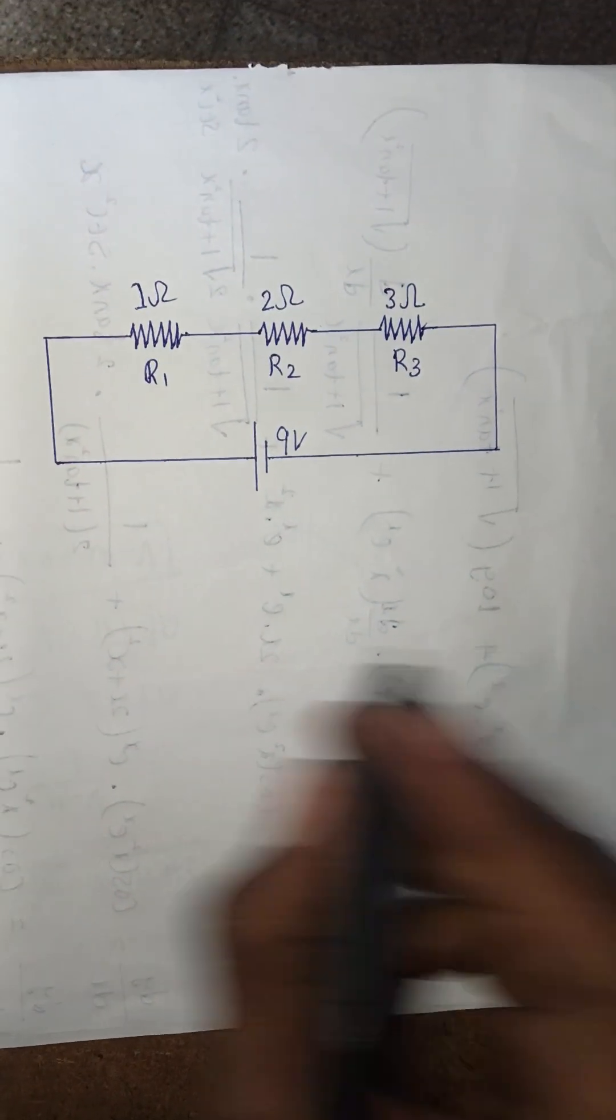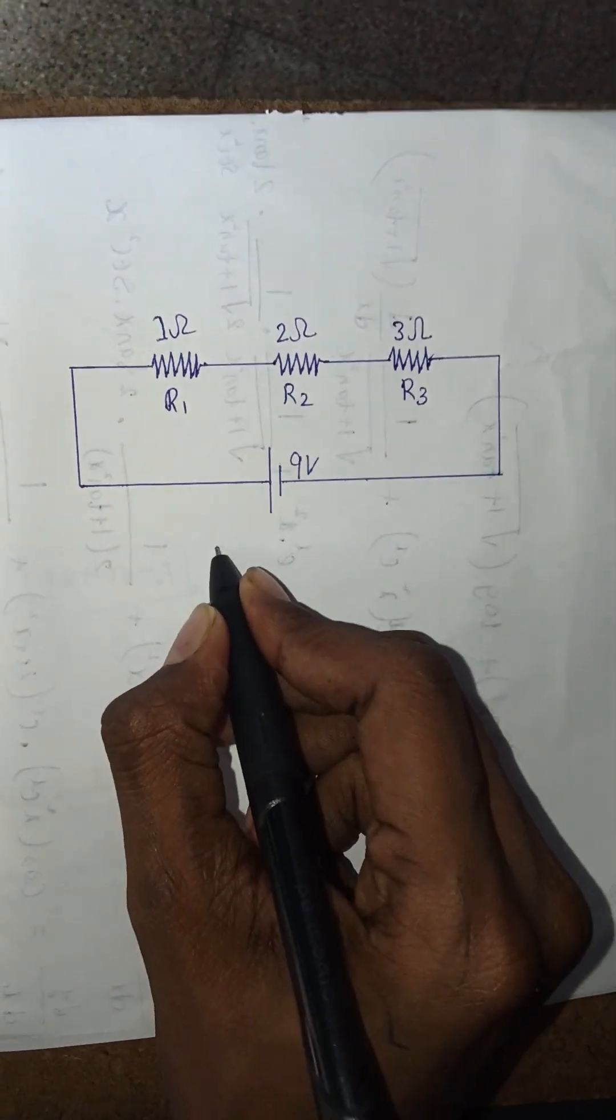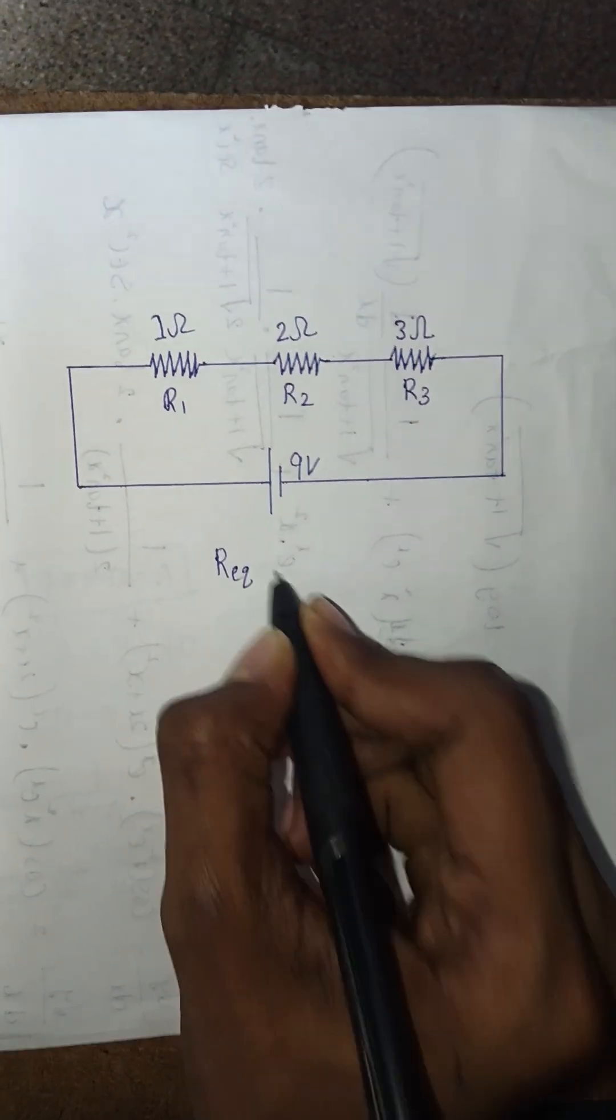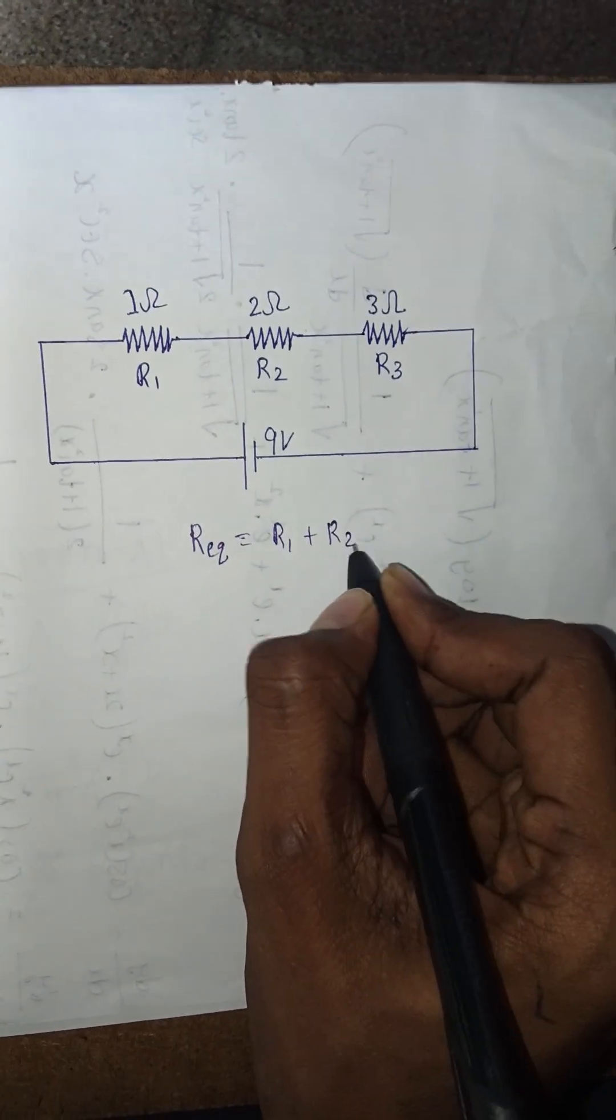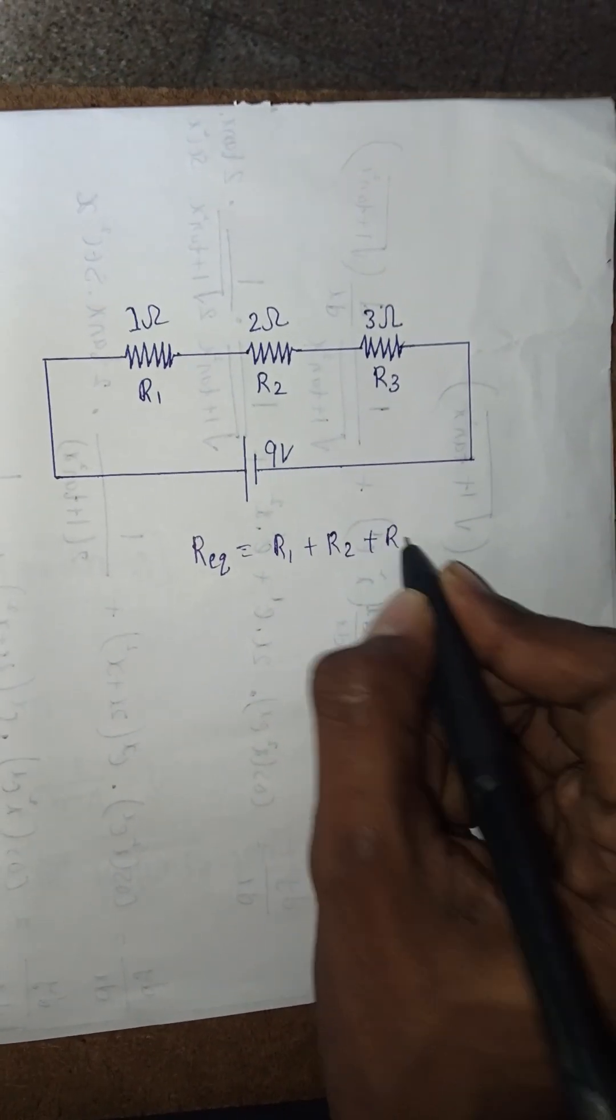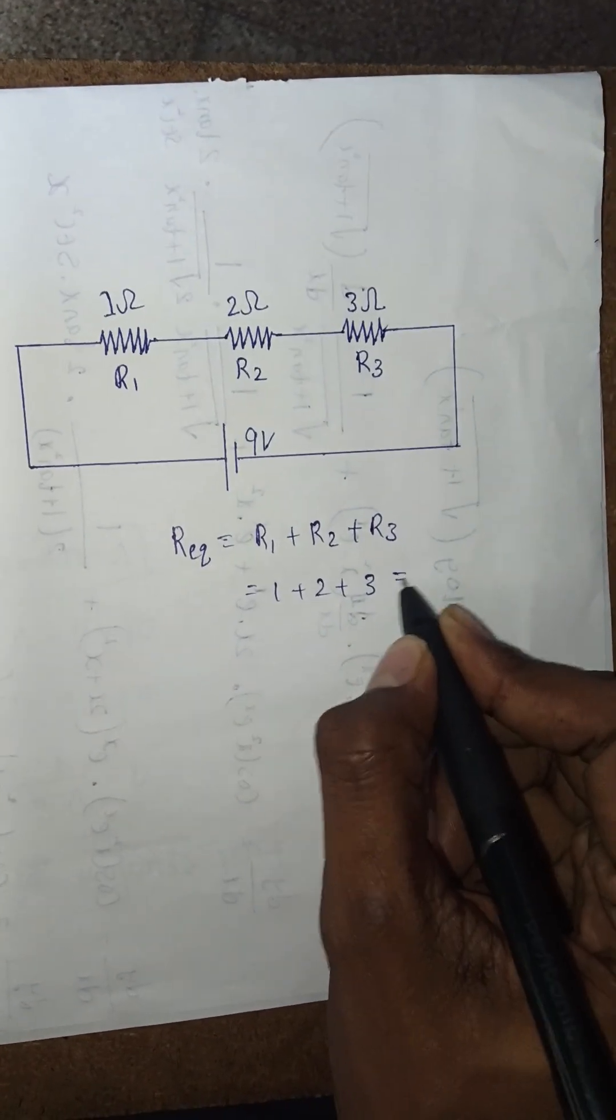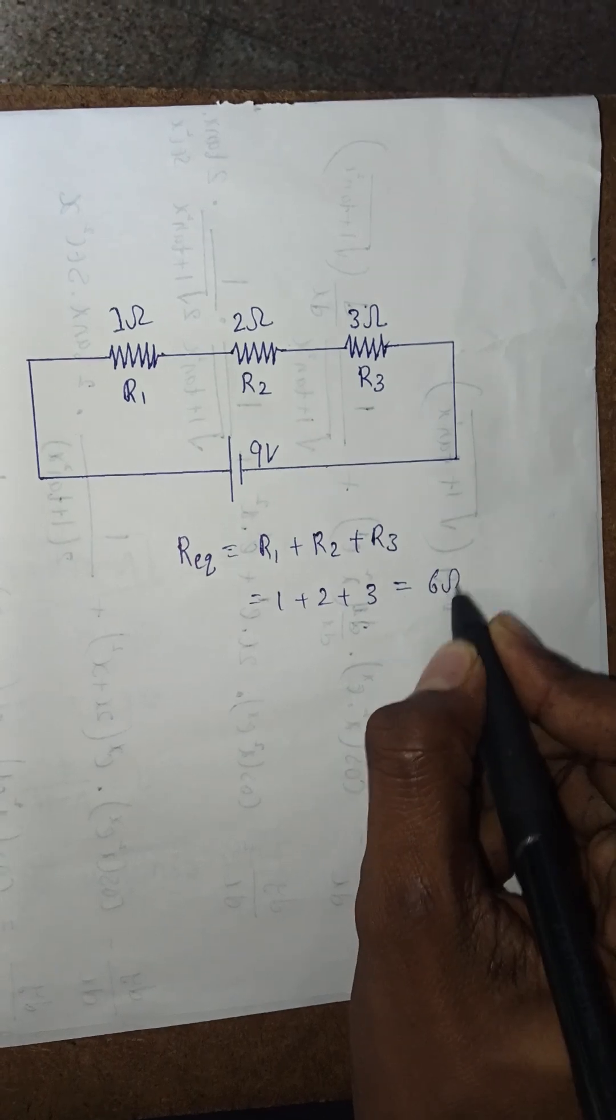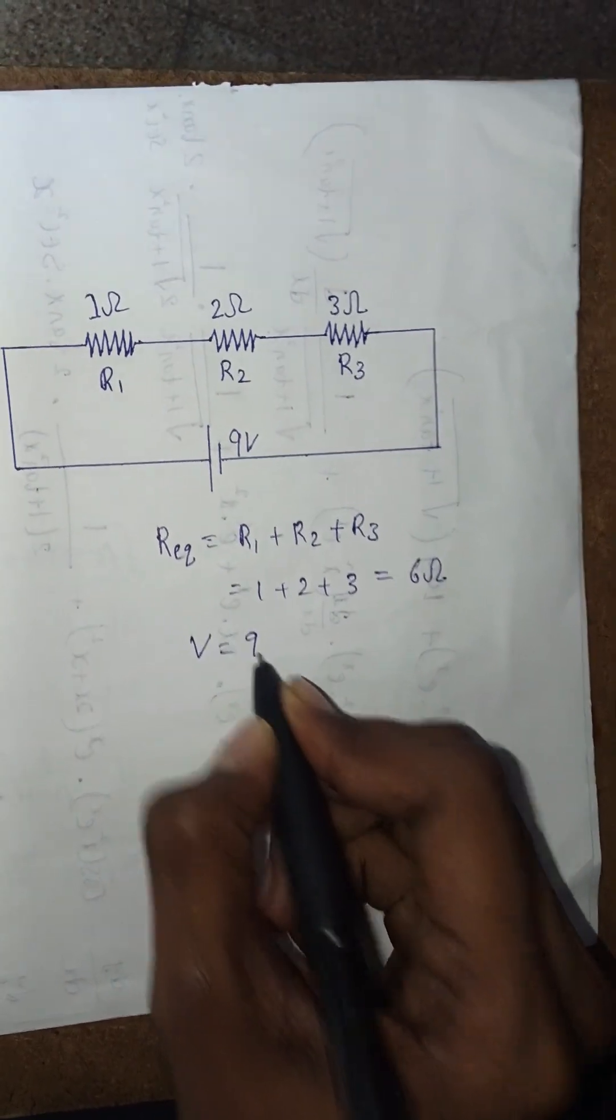For effective resistance, here the three resistors are connected in series, so the effective resistance is R equivalent equal to sum of all the resistances: R1 plus R2 plus R3. Therefore, 1 plus 2 plus 3, that equals 6 ohms.